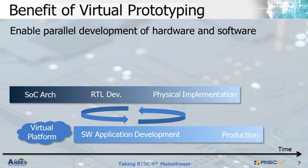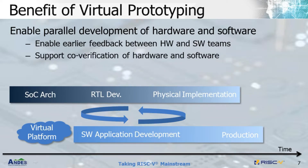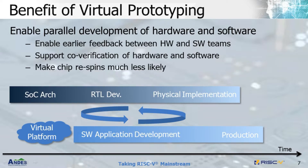Since hardware and software development can be parallelized using virtual prototyping, there are several huge benefits during the overall development cycle. First, it enables the possibility for software and hardware teams to provide feedback to each other earlier before finalizing the hardware and software architecture. Designers can iterate on prototypes without heavily depending on each other's schedule. Second is code verification — software can cross-check their design to ensure functionality is correct with a golden reference, improving product quality. Third, because quality can be improved under this development method, chip re-spins will be much less. And lastly, the overall development time and cost can be reduced since the development cycle can be overlapped.